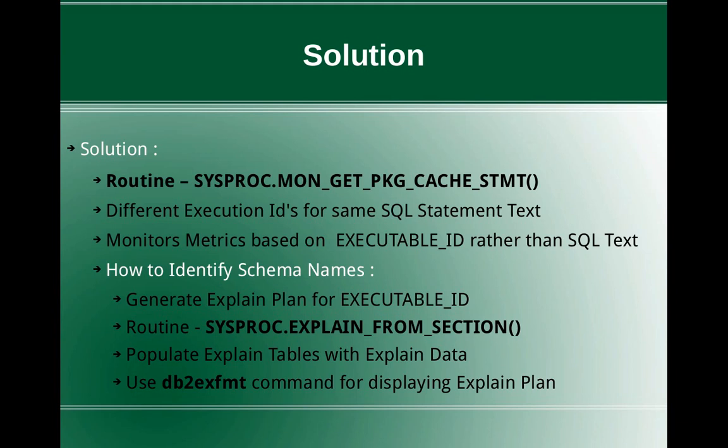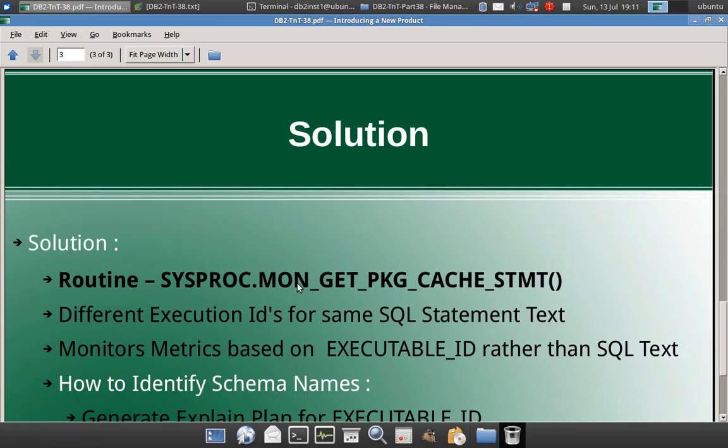Even though you find out that a particular executable ID corresponds to a particular execution, still the query doesn't contain the schema name. So how will we map the executable ID with the schema name? For that, we need to generate the explain plan for the particular executable ID using the routine sysproc.explain_from_section. Refer to the info center for detailed documentation on this routine. Once this routine is executed, it will populate the explain tables with the actual explain data, and you can use the db2exfmt command for displaying the explain plan. Let me quickly demonstrate this scenario with an example.